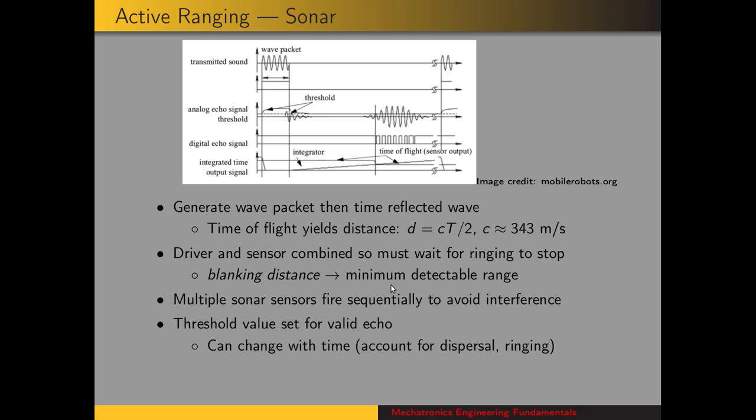And that idea of the amplitude decreasing as the distance between the object and the sensor increases leads to the fact that sensors also have a maximum range. They have a maximum range because beyond a certain point, the reflected wave from an object is going to be too small of an amplitude to detect. So the range for sonar sensors is generally around 12 centimeters for a blanking distance, or a minimum range, up to 5 meters maximum range. And the resolution is about 2 centimeters.